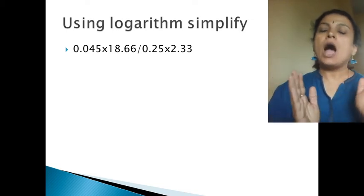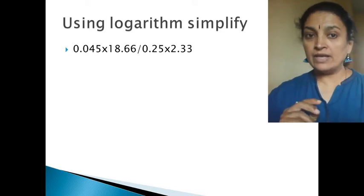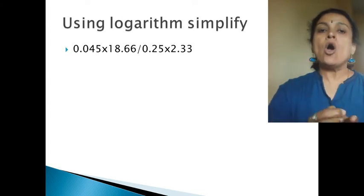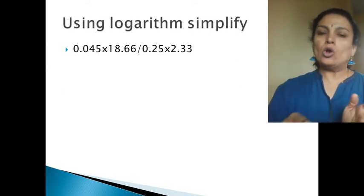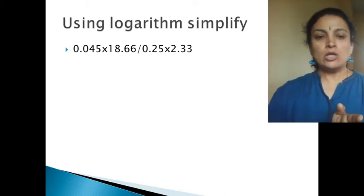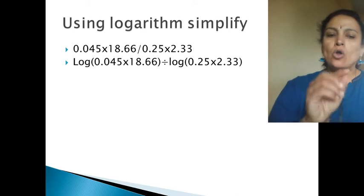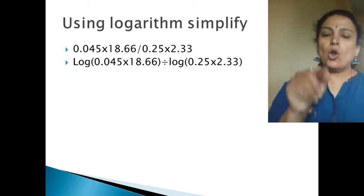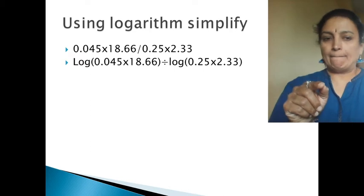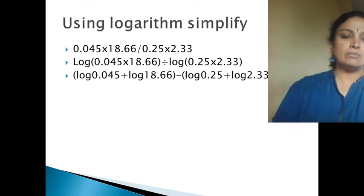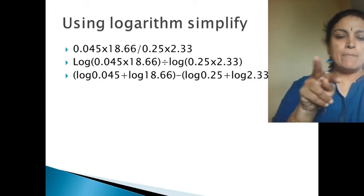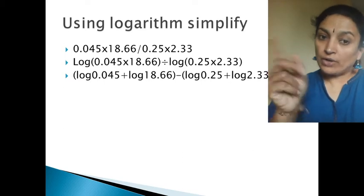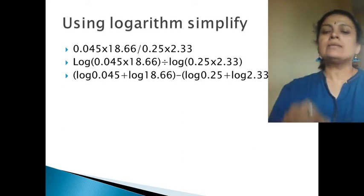We make this addition, and then we go with division. For division, the logarithm law says it should be minus — log(m/n) = log m − log n. So log(0.045 × 18.66) in a bracket, divided by log(0.25 × 2.33), becomes: log 0.045 + log 18.66, minus, log 0.25 + log 2.33.